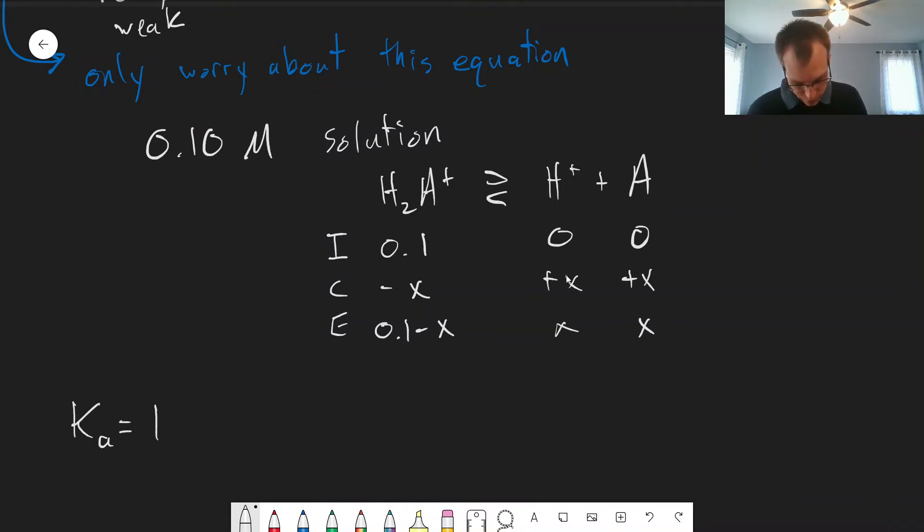So KA is going to be 10 to the negative 2.344. This is using the pKa1 value. Just converting that to KA will be equal to X squared over 0.1 minus X. So this is the same approach we used in the last chapter. We can go ahead and solve this. I won't go through all the details for this one, but we get X equals 0.019 molar.